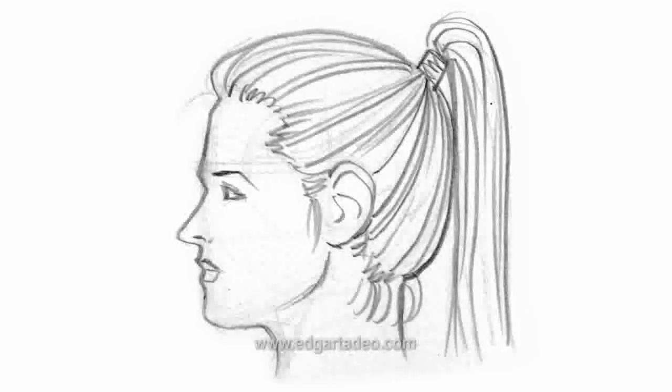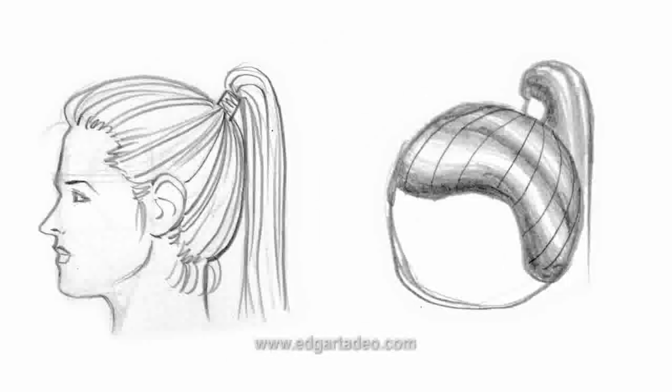When female hair is tied up, all you have to do is draw the flow lines going to the tie. The ribbon example is also applied here.